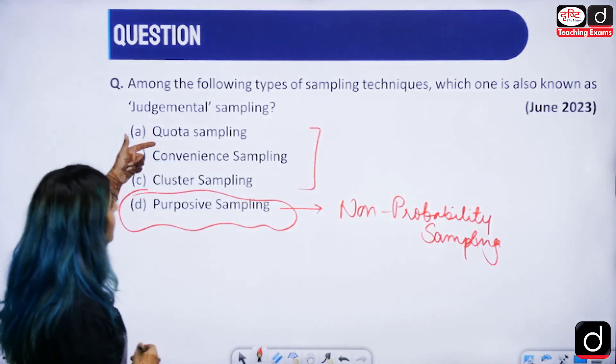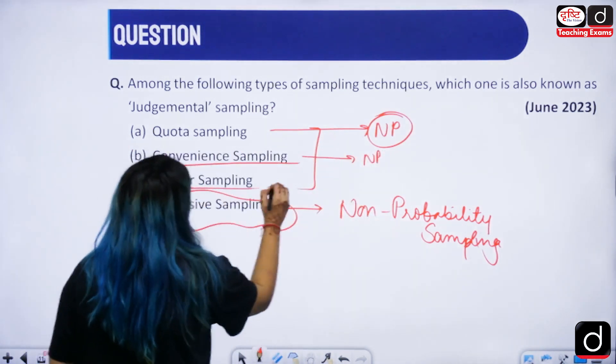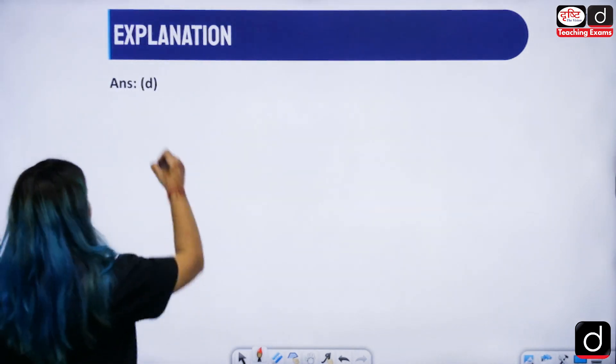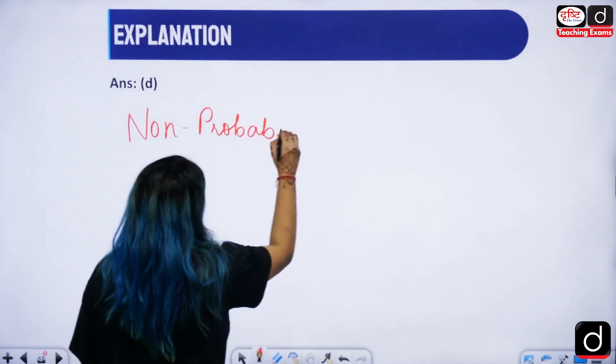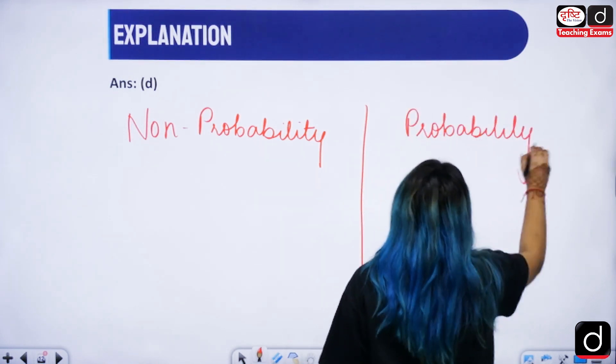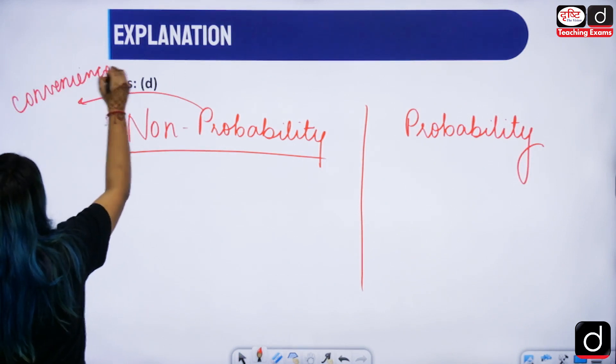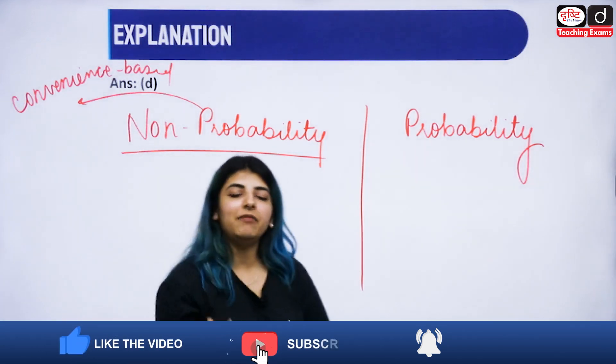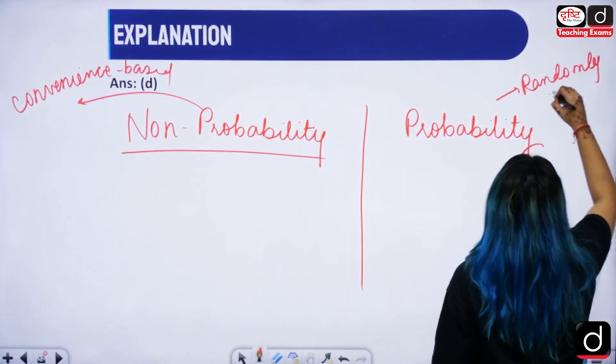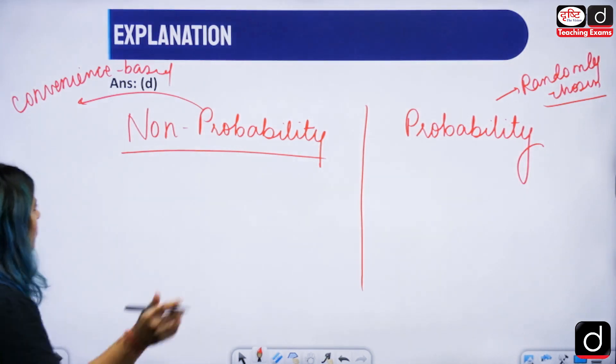Quota is also from non-probability. Convenience is also from non-probability. Cluster is from probability. We have different types majorly: non-probability and probability sampling techniques. These are the techniques which are required when a person wants to choose certain samples for his or her research. Non-probability, majorly the sample which is chosen is convenience-based. Whereas in probability, because the name itself is suggesting that there is a probability, here the theory of randomness is there, randomly chosen.